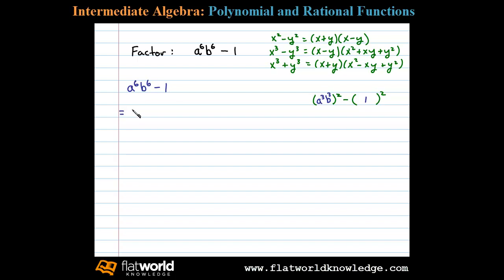So we could factor this using difference of squares and write a cubed b cubed plus one times a cubed b cubed minus one. Now we notice the factors here are themselves - this one's a sum of cubes and this factor is a difference of cubes.